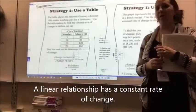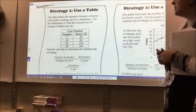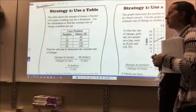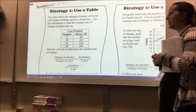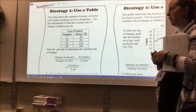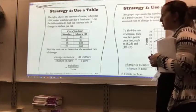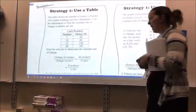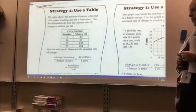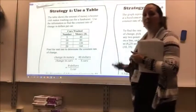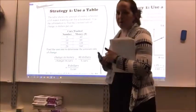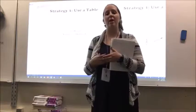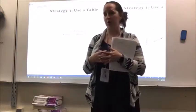The first strategy we can use is a table. The table shows the amount of money a booster club makes washing cars for a fundraiser. Use the information to find the constant rate of change in dollars per car. I want to find the unit rate to determine the constant rate of change. If you remember back from lesson one, unit rate is when I take two numbers, divide them, and get one in the bottom.